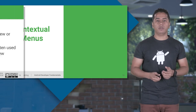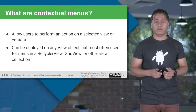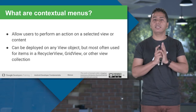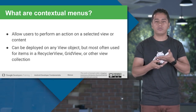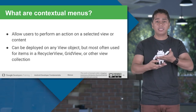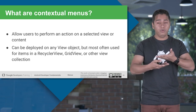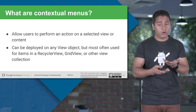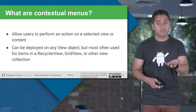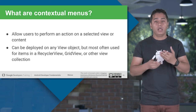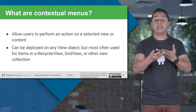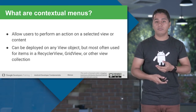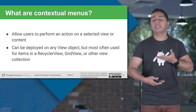Now let's discuss contextual menus. Contextual menus are not associated with an activity but are directly associated with views. When I say view, it can be associated with EditText, TextView, or buttons. It can also be associated with ListView, RecyclerView, or any ViewGroup or collection of views.